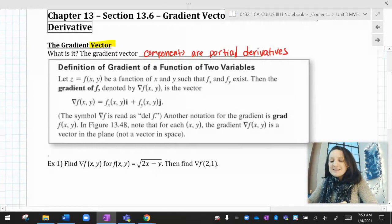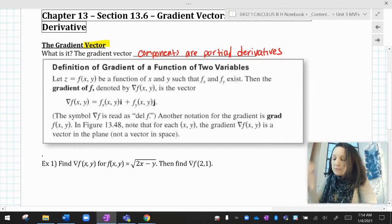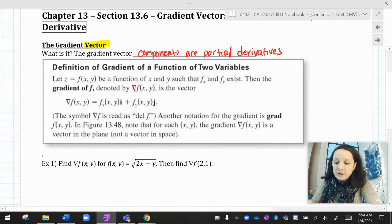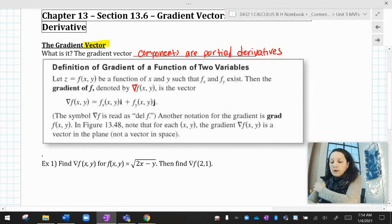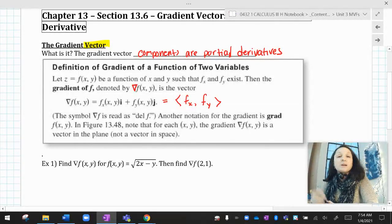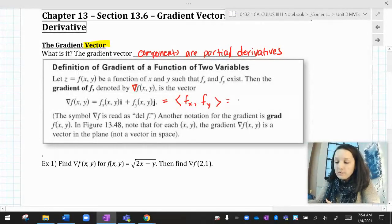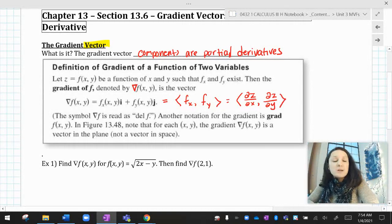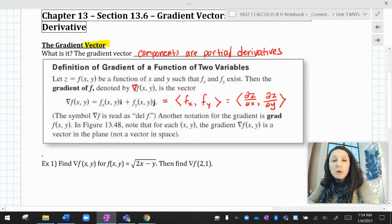So it says let z equal f of x, y be a function of x and y such that f sub x and f sub y exists, and then the gradient of f denoted by this upside down triangle called the del, del f is the vector del f of x, y equals f sub x of x, y and f sub y of x, y. Long story short, you have f sub x first and f sub y second. Or you can think of that as dz/dx first and dz/dy second. That's it. It's really just taking the two first partial derivatives and making them the components of a vector.